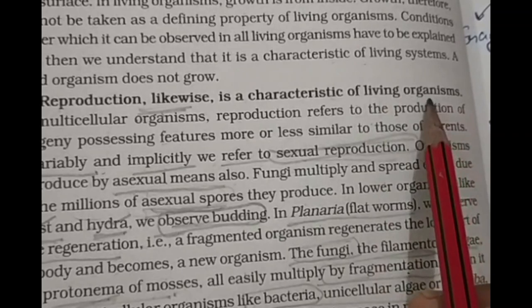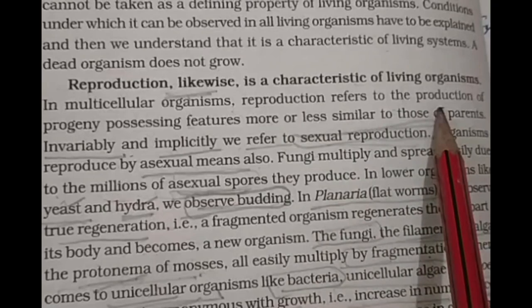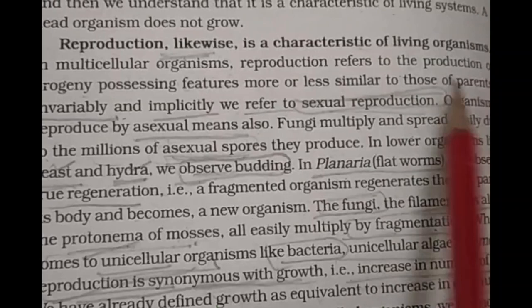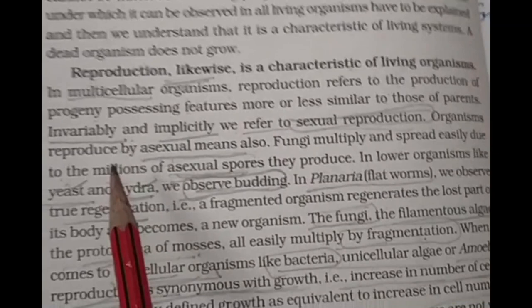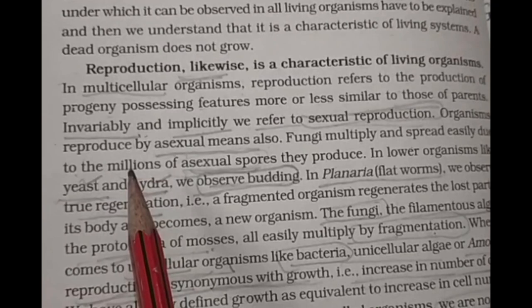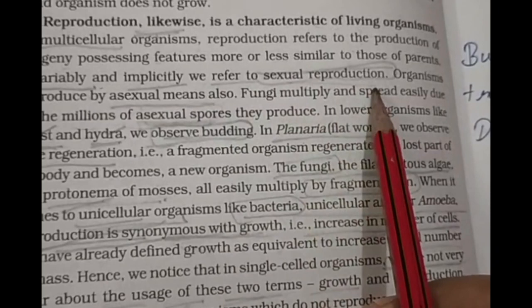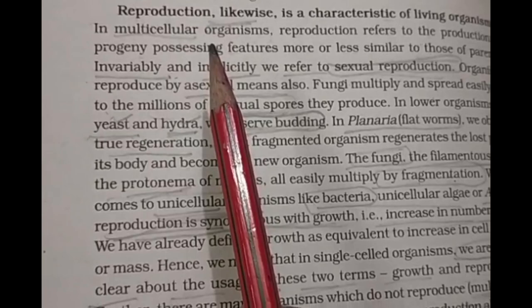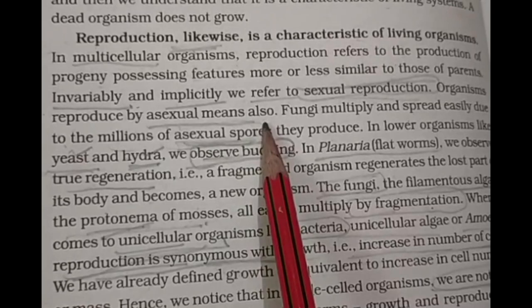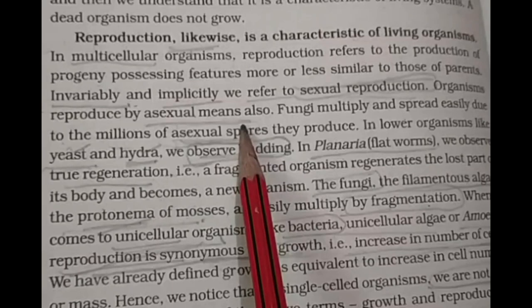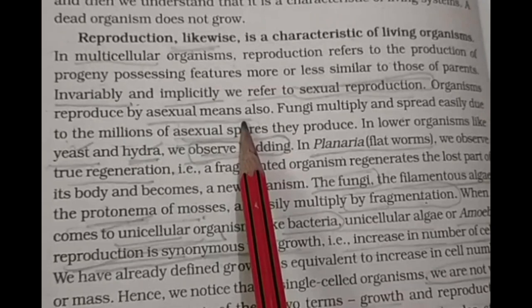The next characteristic is reproduction. Reproduction is a characteristic of living organisms. In multicellular organisms, reproduction refers to production of progeny possessing features more or less similar to those of parents — it is not an exact copy. When we talk about reproduction, we primarily refer to sexual reproduction, though organisms are also reproduced by asexual means.